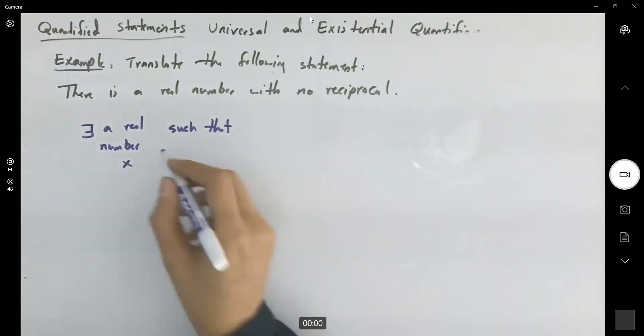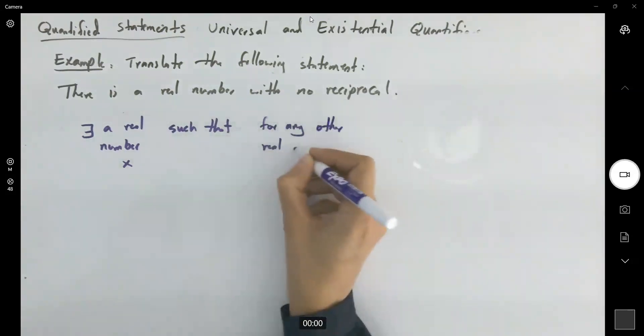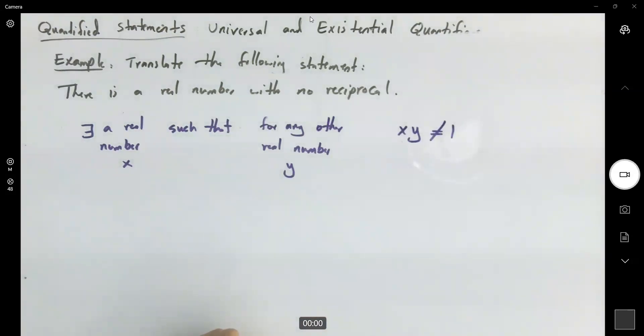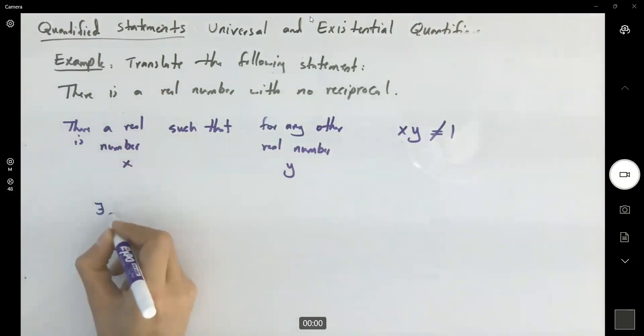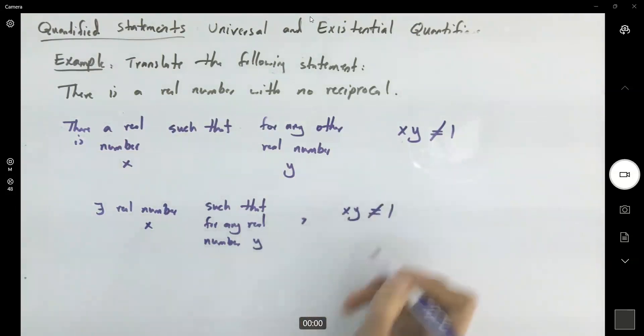Such that what? If you take any other real number and multiply it by x, it's not 1. Such that for any other real number, like y, xy, the multiplication is not 1. So, there is a real number like x such that for any real number y, xy is not 1.